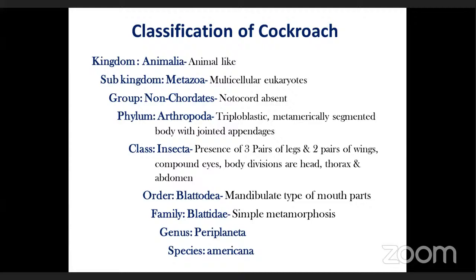Before independence, wheat came from America to England and then India, and with that wheat these cockroaches came to India. In India, the warm environment suited their living conditions, so the cockroach multiplied and now lives with us. So Periplaneta americana is the American cockroach, while the Indian cockroach is Blatta orientalis — smaller, broader, and darker in color.